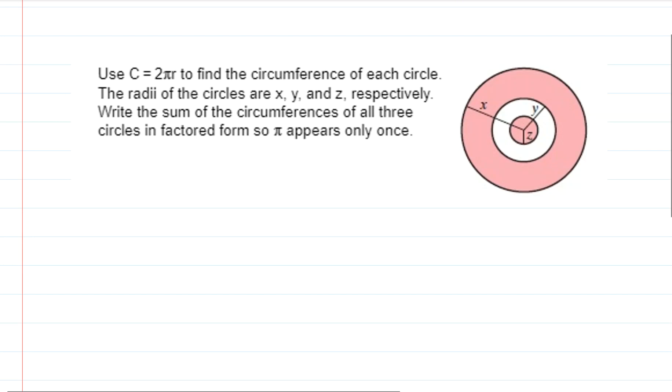If you were given this problem, you were given this diagram first of all with some circles. You have the radii of the circles: the inner radius is z, the radius for the second largest circle, the white one, is y, and the radius for the largest circle is x.